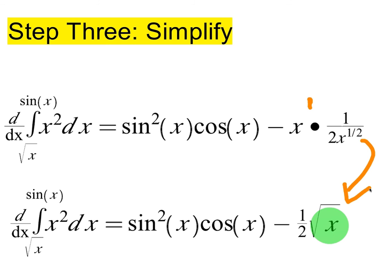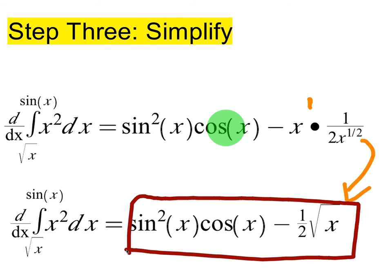There was not much to do with the first part—just sin²(x) times cos(x). This is our final answer: sin²(x)cos(x) minus (1/2)√x. This is my upper limit and this is my lower limit. I plugged them in and multiplied by the derivatives to get sin²(x)cos(x) - (1/2)√x.